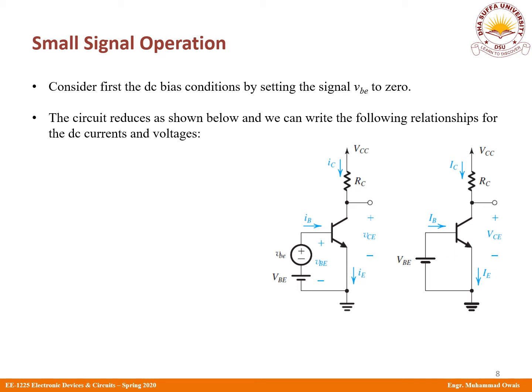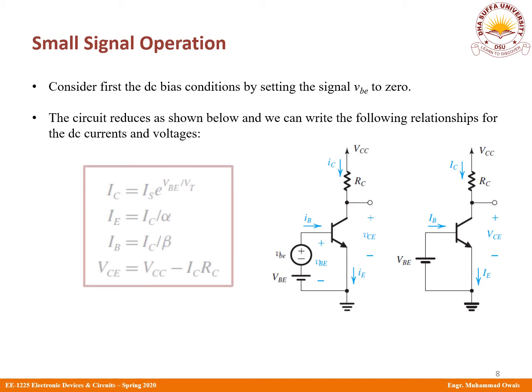Once you do the DC analysis, you will find out the following relationships. The VCE is nothing but VCC minus IC·RC. For this particular circuit, VCE and VC are exactly the same.